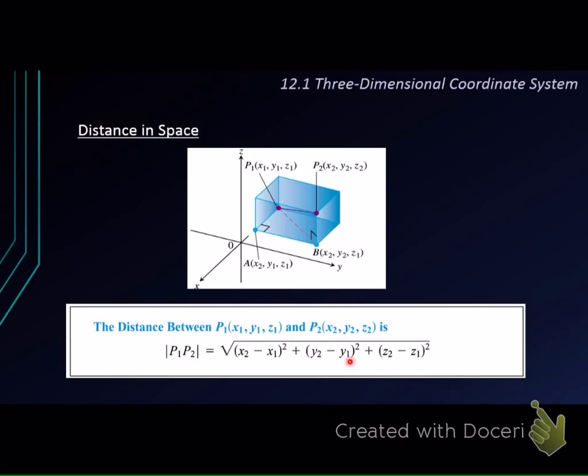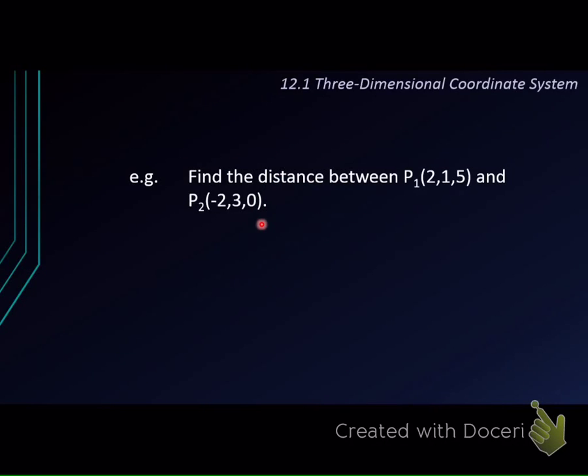Let's take a look at the example. This one, we would like to find the distance between P1 (2, 1, 5) and the point P2 (-2, 3, 0). Okay, let's start to do the calculation.